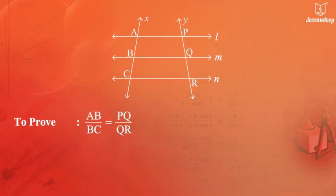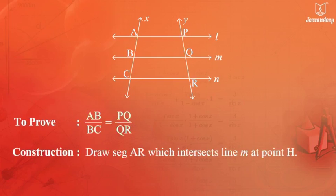To prove: AB upon BC is equal to PQ upon QR. Construction: Draw segment AR which intersects line M at point H.